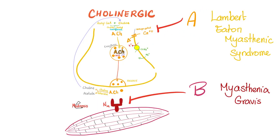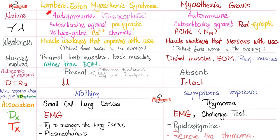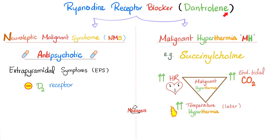Lambert-Eaton versus myasthenia gravis: Lambert-Eaton has autonomic symptoms, myasthenia does not. Lambert-Eaton has diminished reflexes, myasthenia does not. Dantrolene is a ryanodine receptor blocker — you can use it to manage neuroleptic malignant syndrome as well as malignant hyperthermia.